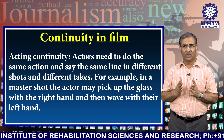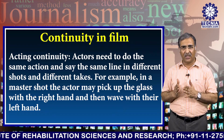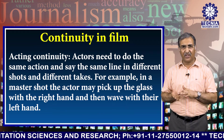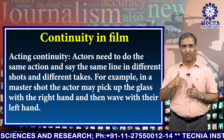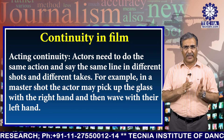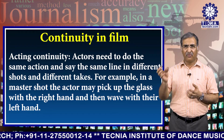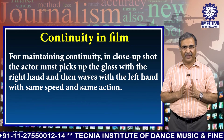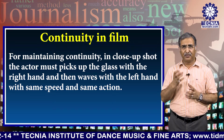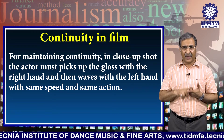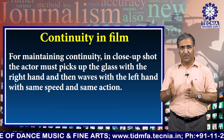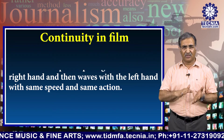First, action continuity. Actors need to do the same action and say the same line in different shots and different takes. For example, in a master shot, the actor may pick up the glass with the right hand and then wave with their left hand — with the same speed and same action.